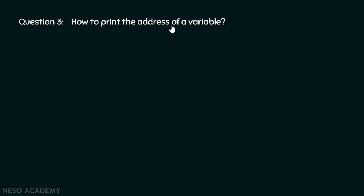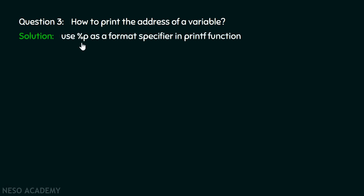Let's move on to the third question: how to print the address of a variable? It is a simple but important question. Use `%p` as a format specifier in the printf function to print the address of a variable. Using this format specifier, we can print the address of a variable in hexadecimal format.